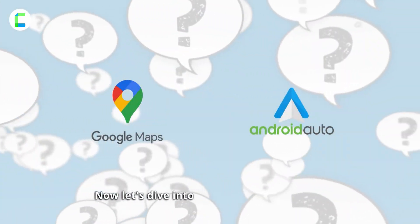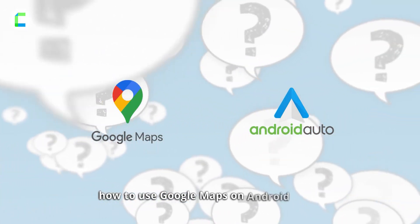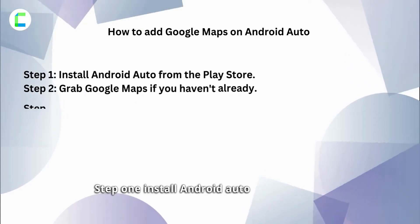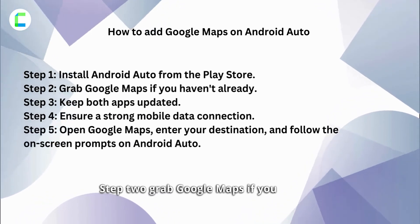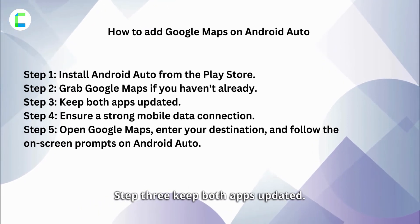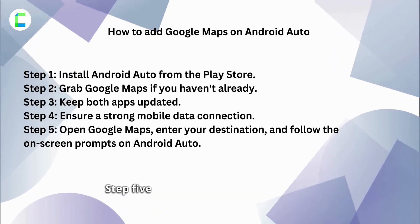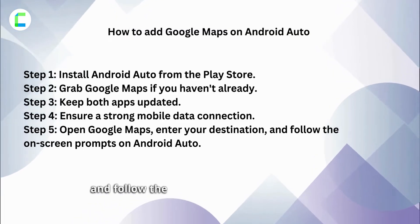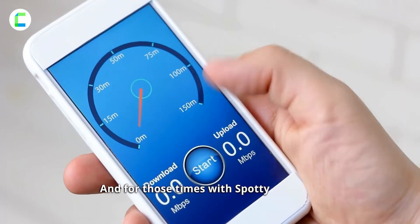Let's dive into the step-by-step guide on how to use Google Maps on Android Auto. Step 1: Install Android Auto from the Play Store. Step 2: Grab Google Maps if you haven't already. Step 3: Keep both apps updated. Step 4: Ensure a strong mobile data connection. Step 5: Open Google Maps, enter your destination, and follow the on-screen prompts on Android Auto.